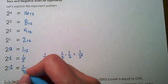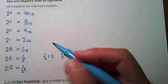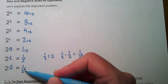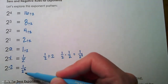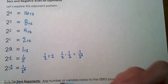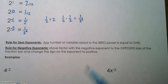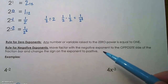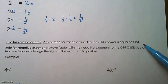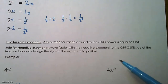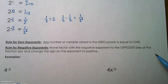1 over 2 squared — I want us to notice that pattern. What's happening is the denominator is growing, so negative exponents are actually repeated division. The rule for 0 is that any number or variable raised to the 0 power is going to be equal to 1. The rule for negative exponents is that you move the factor with the negative exponent to the opposite side of the fraction bar and change the sign on the exponent to positive.